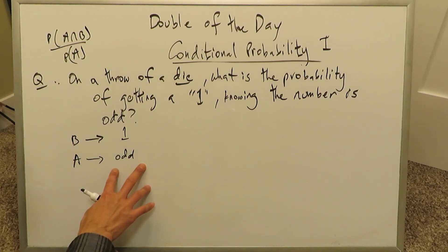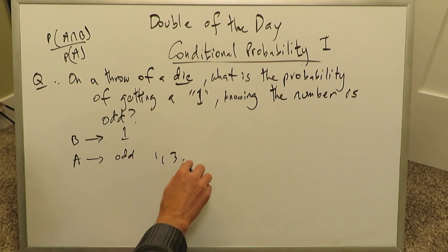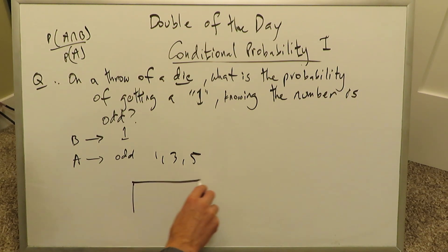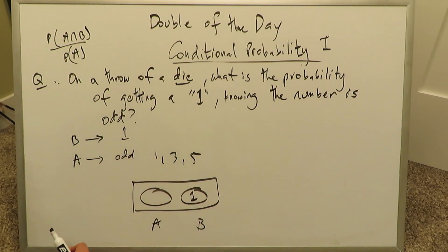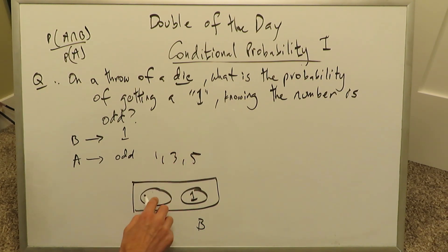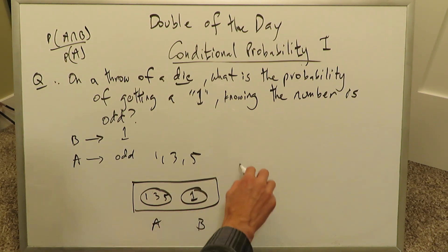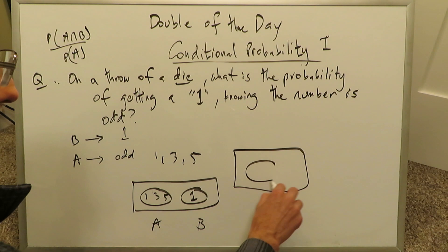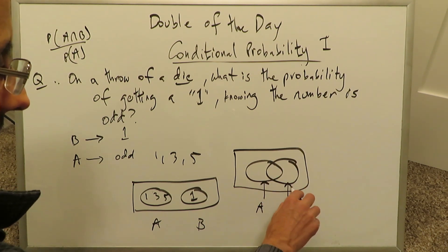If you know you're going to get an odd number and you're looking specifically for a 1, the odd numbers on a die are 1, 3, and 5. Let's create a Venn diagram with bubble A and bubble B. B represents the event you're examining — getting a 1. A represents knowing an odd number will show: 1, 3, or 5. Look for numbers present in both bubbles — that item is number 1. This learning process eventually becomes mental.